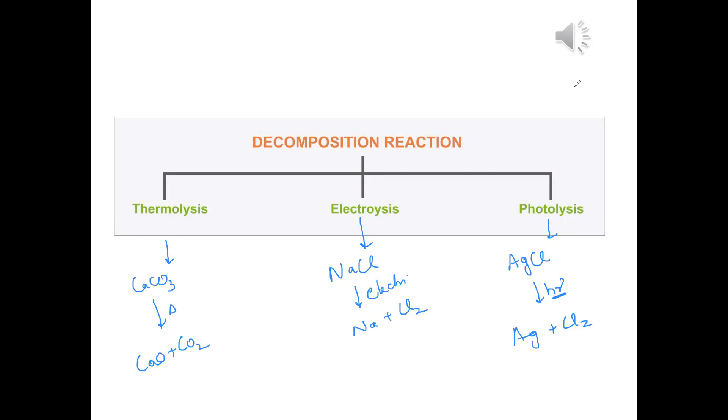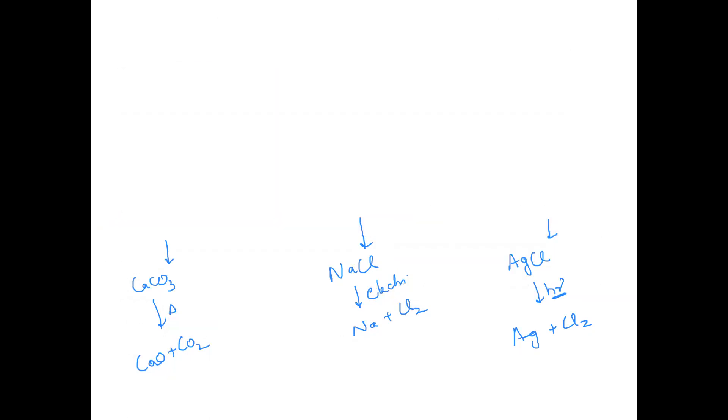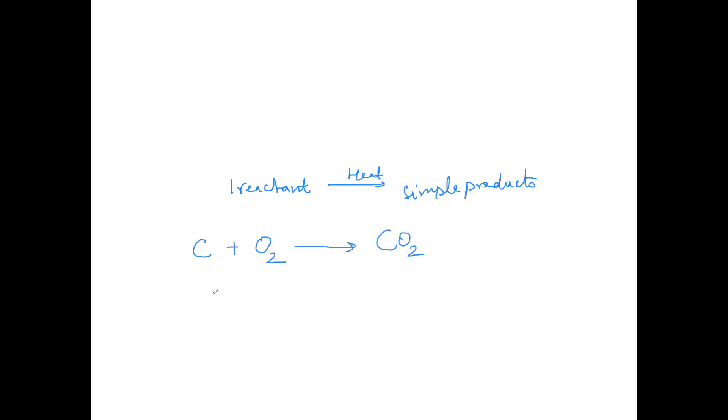These are the decomposition reactions. Have you ever thought what will happen if we reverse this? I am taking one reactant, giving heat or electricity to it and it gives simpler products. But for example, I take carbon, heat it with oxygen. What I will get? CO2. I take calcium oxide, pass carbon dioxide through it, I get CaCO3.